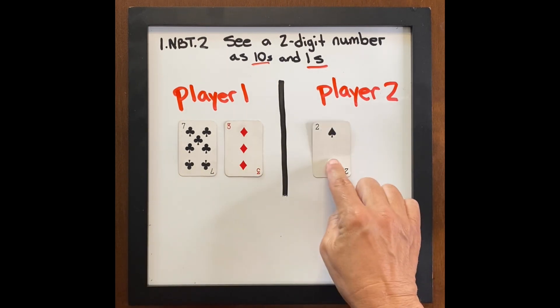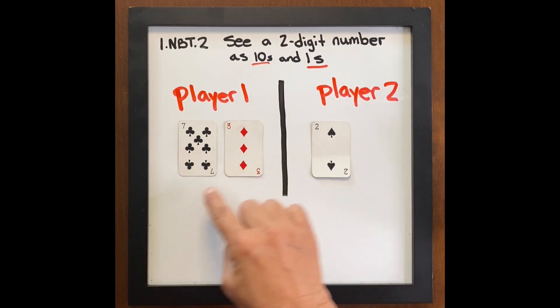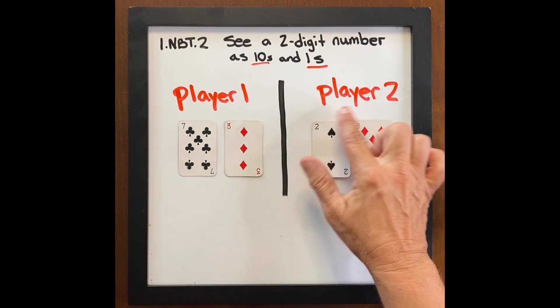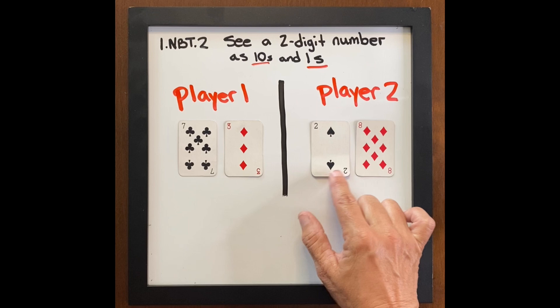Player two has two tens. Player two probably knows that they lost, but wait, they need to wait because they could still earn the point. Player two has two tens, eight ones for 28.